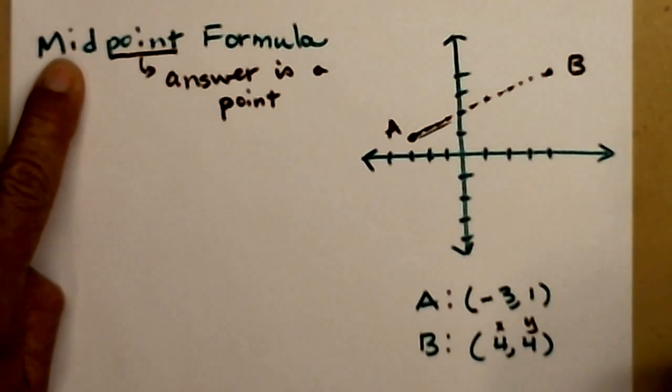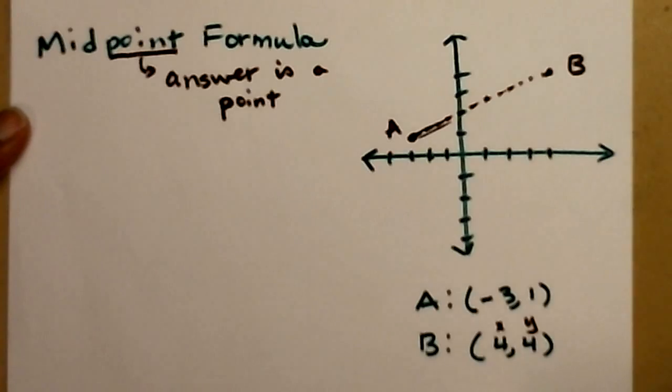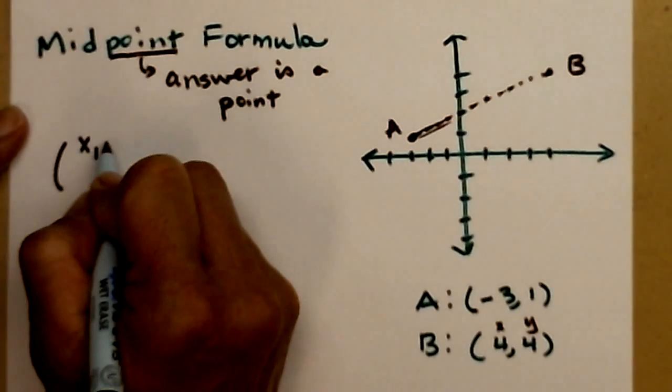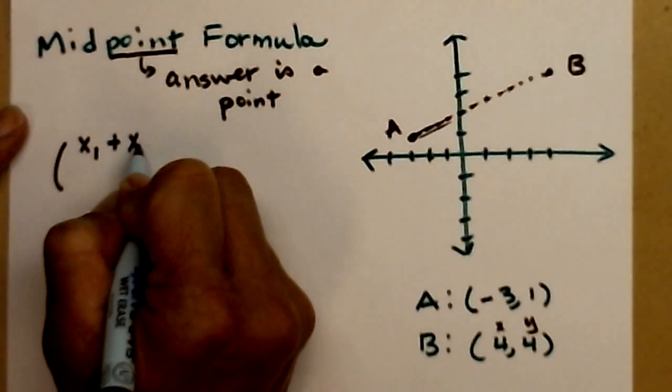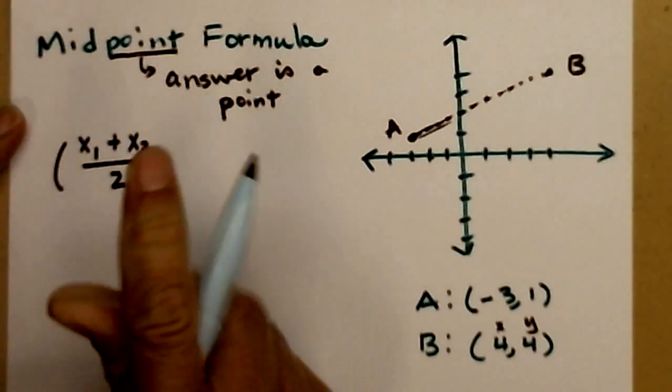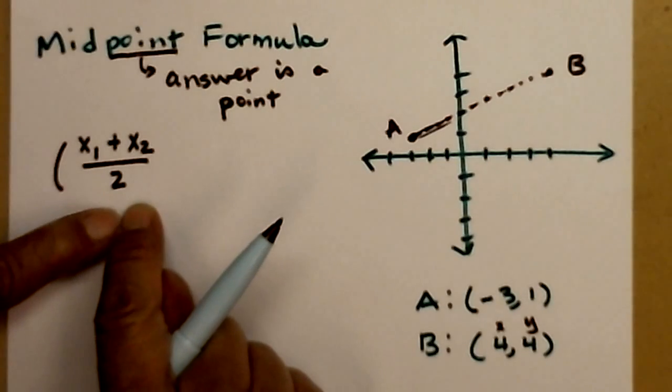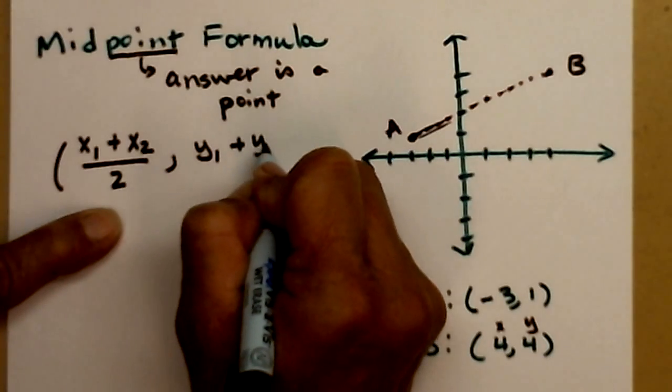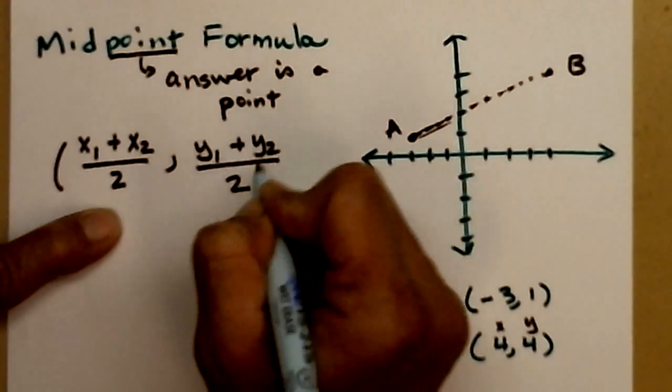So like I said, it's the middle between, and we find that by averaging. And so the formula looks like this. x sub 1 plus x sub 2 over 2. Add the two x values, divide by how many? Strict average. y sub 1 plus y sub 2 over 2.